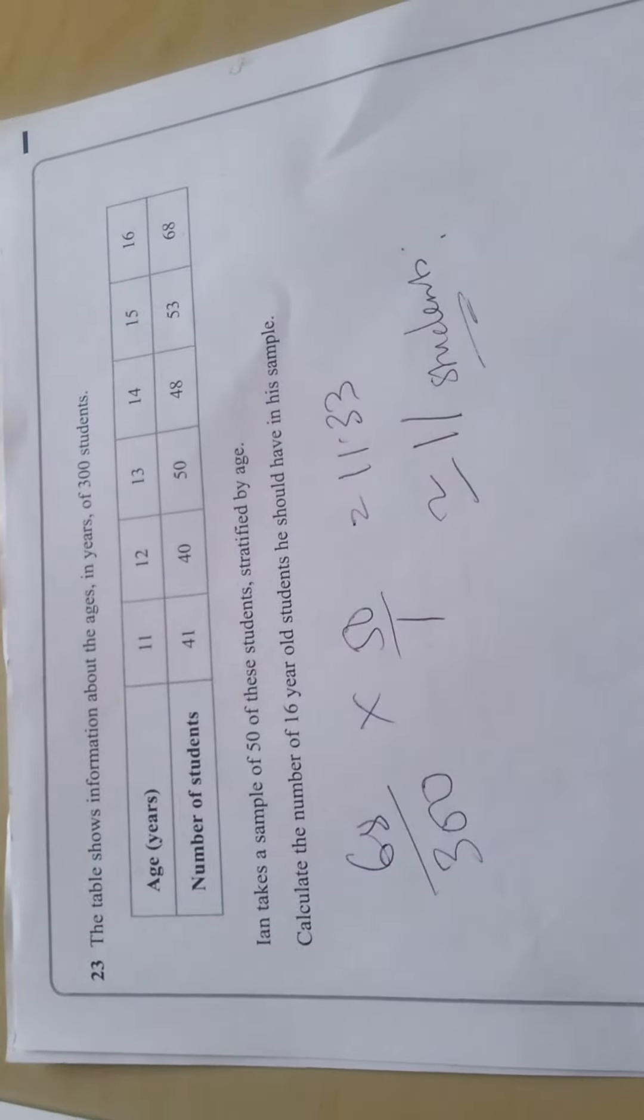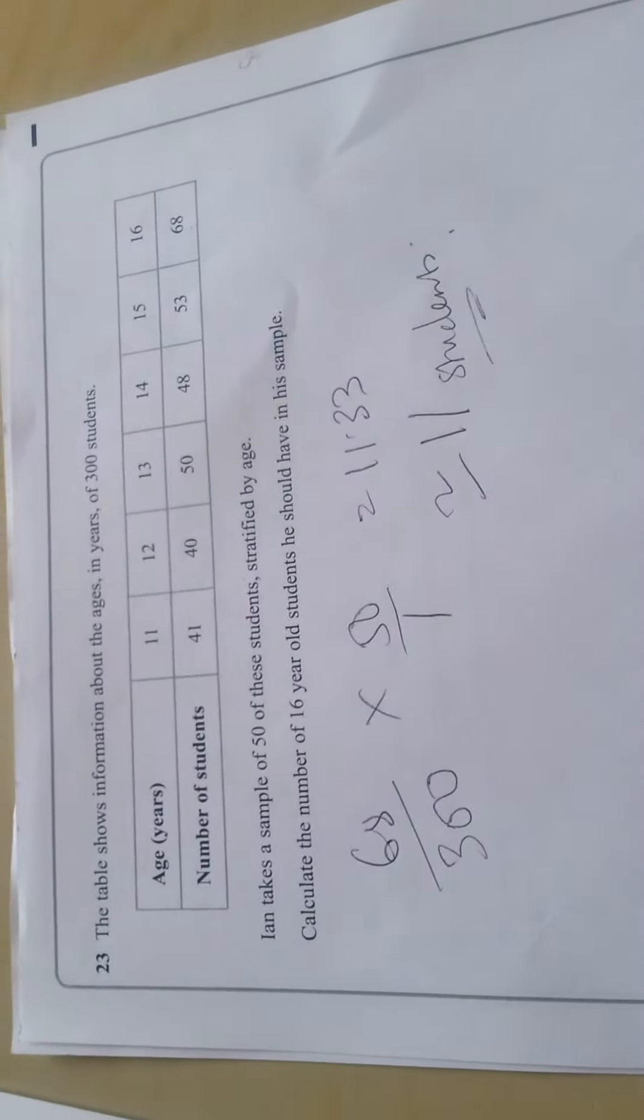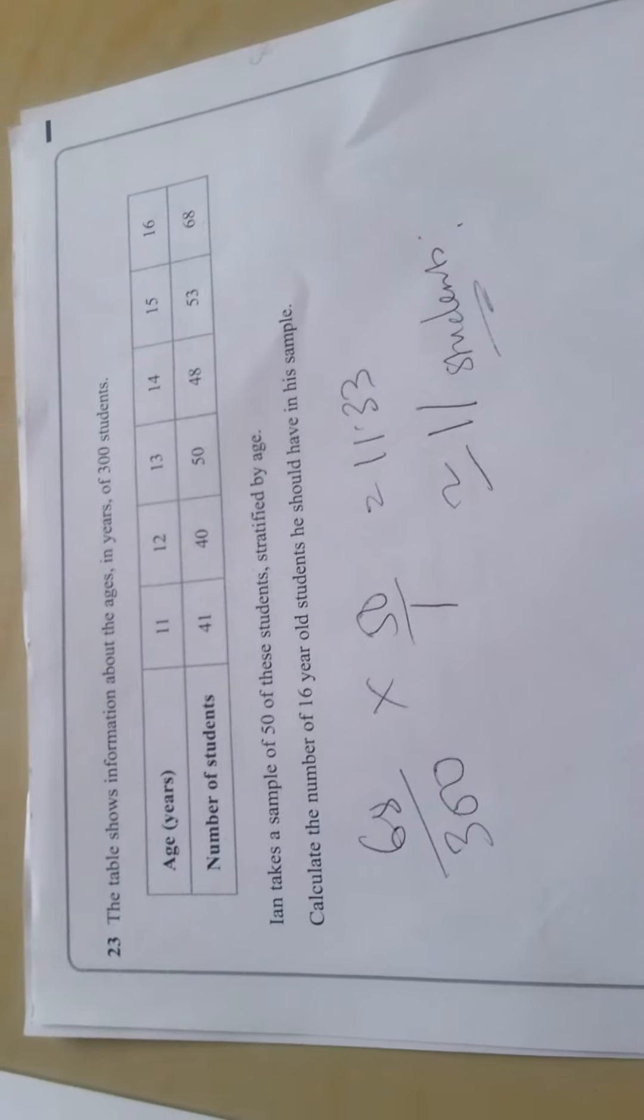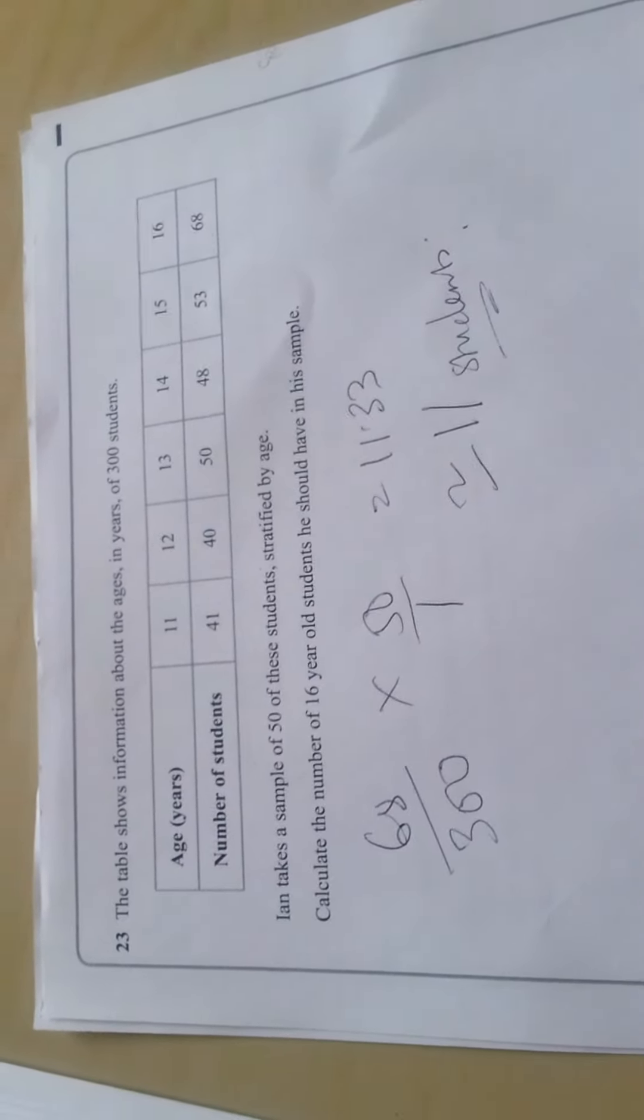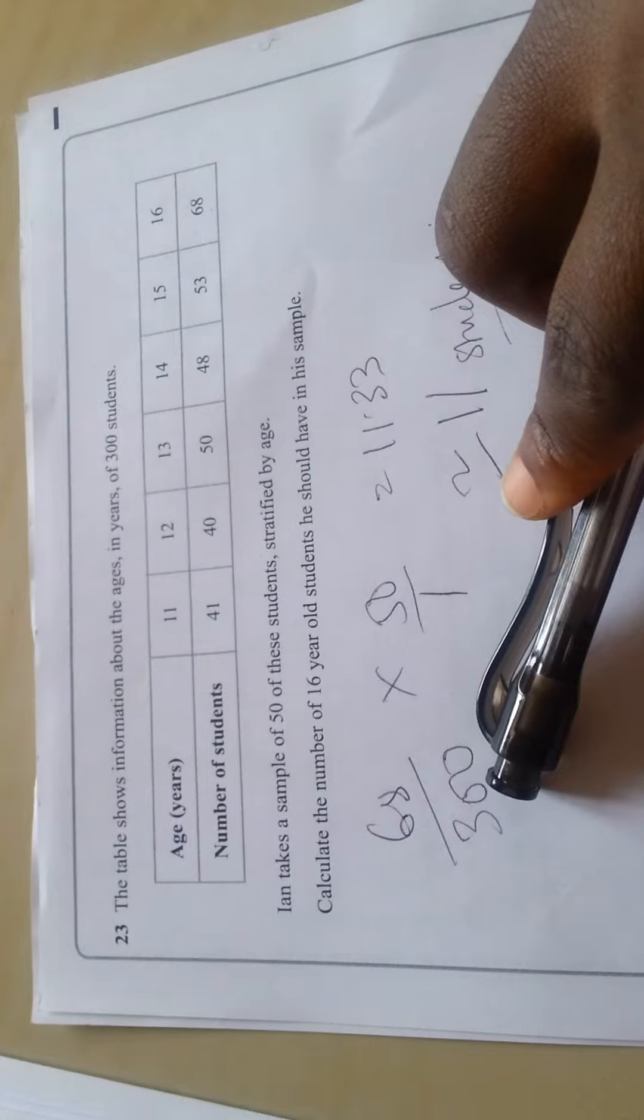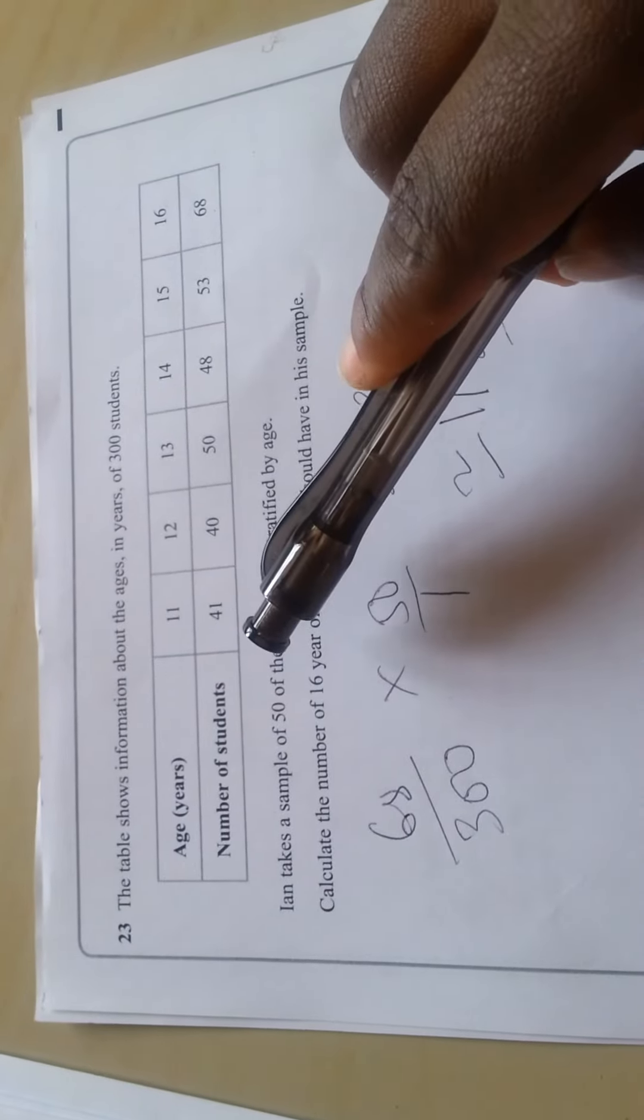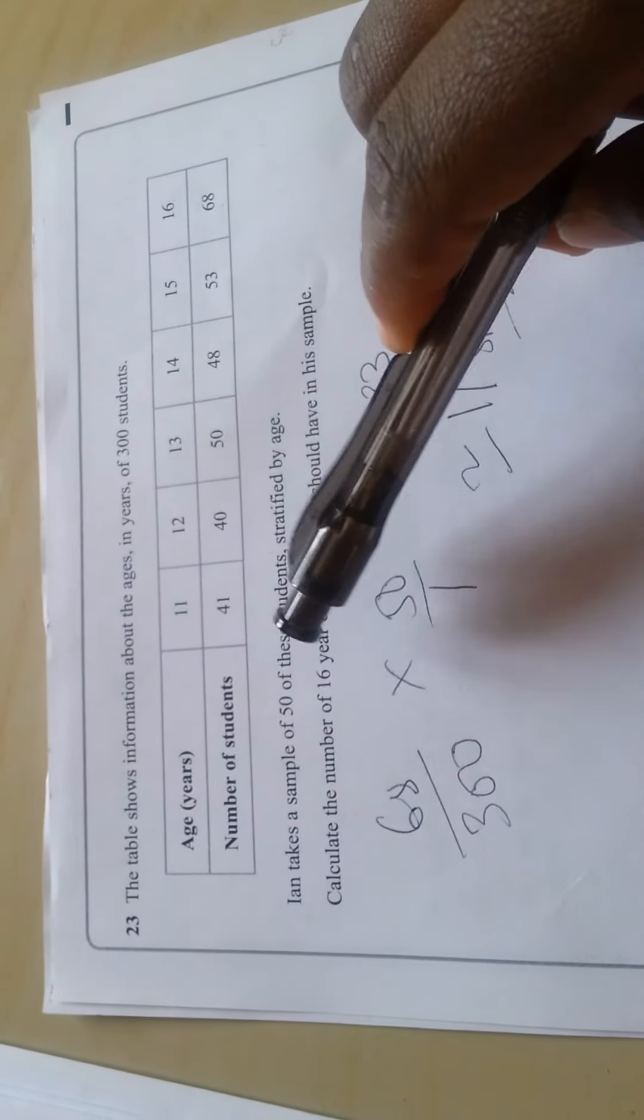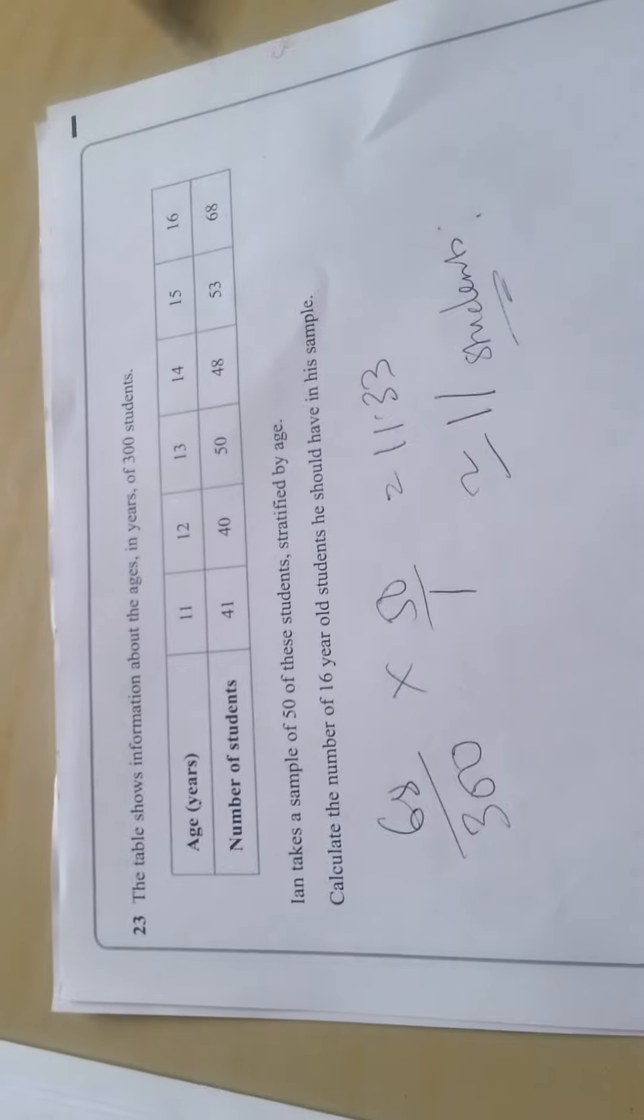So the basic thing we did was we found out how many 16 year old students we have in a sample of 300, then we just did that number over the total, that's 300, times the particular selected sample, that's 50, so we got the number of students.